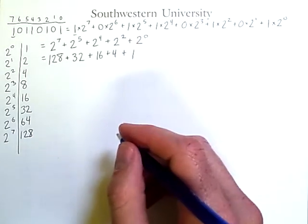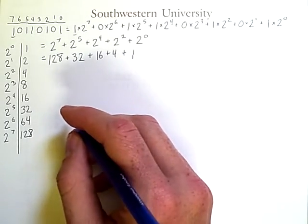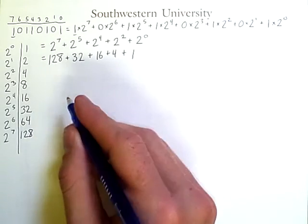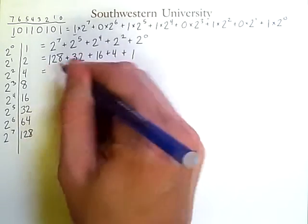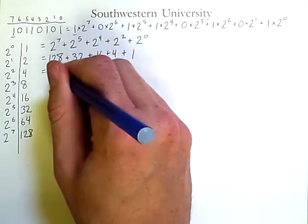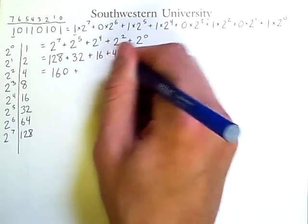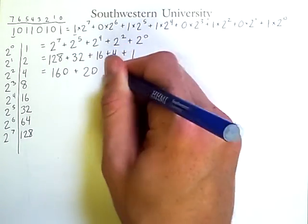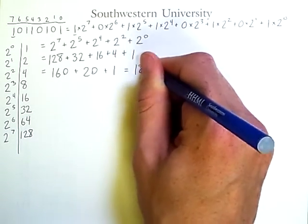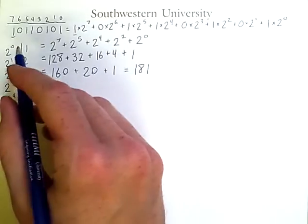Now, you could resort to a calculator at this point, though it is often easy to pair numbers together that are powers of 2 and add them up quickly. For example, here the 2 and the 8 combine to get 10, and so we get 160. Here the 16 and the 4 combine to give us 20. Then we have 1, so we get 181 as the decimal equivalent of this binary number.